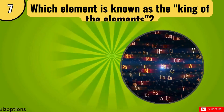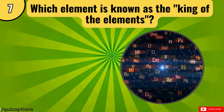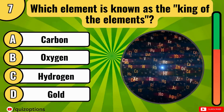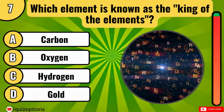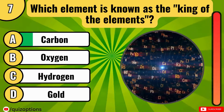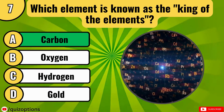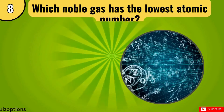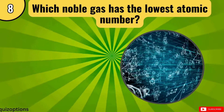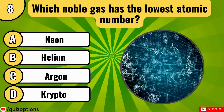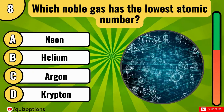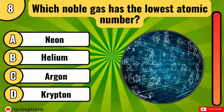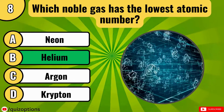Which element is known as the king of the elements? Carbon is the king. Which noble gas has the lowest atomic number? It's helium.